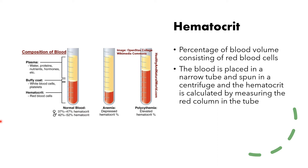In normal people, a male has a hematocrit of 42 to 52, and a female has a slightly lower hematocrit because they typically have monthly menstrual periods and some blood is lost. You divide the red column by the height of the total column and multiply by 100 to get your percentage. In anemic patients, the red column is lower because there are fewer red blood cells. In patients with polycythemia, the red column is higher because there are too many red blood cells.